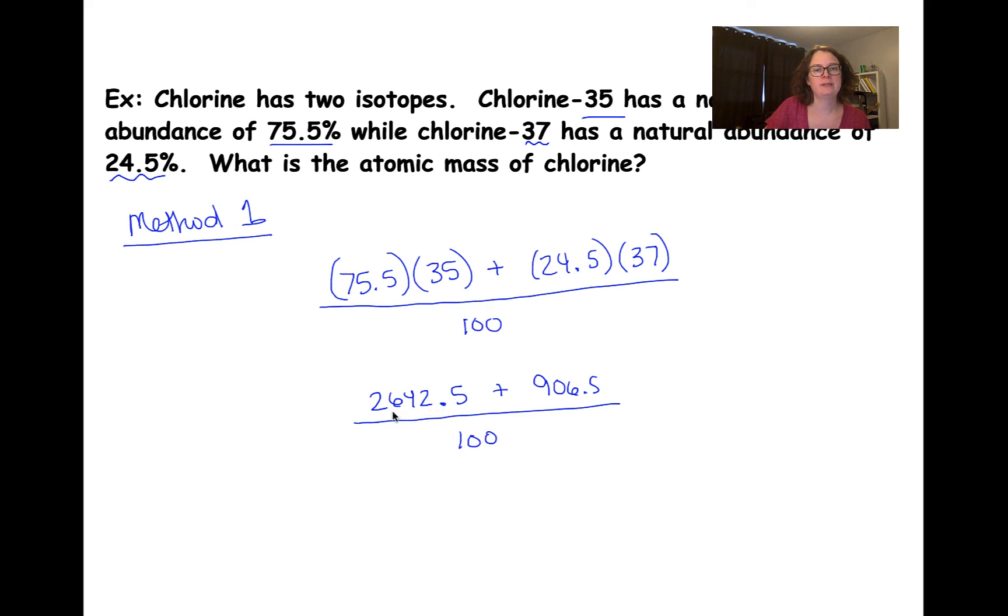2,642.5 plus 906.5 gives me 3,549, and that's still divided by 100. And I can finally do that last step and I get 35.49 atomic mass units.